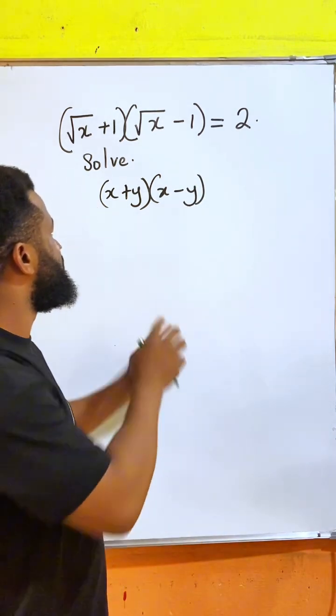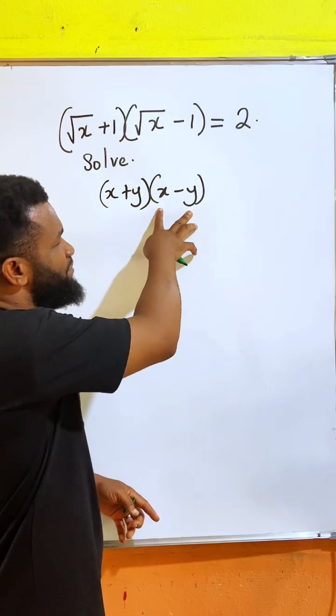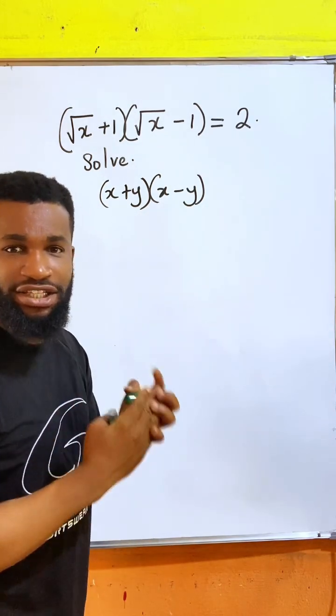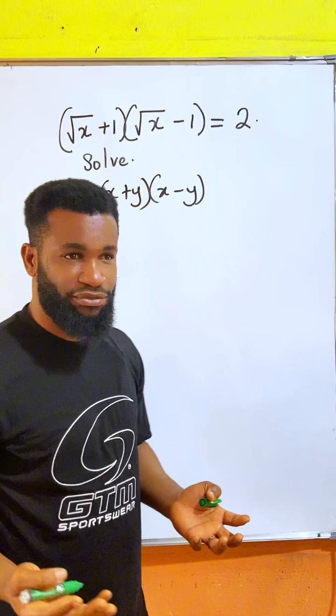Whenever you have the same thing adding, the same thing subtracting, and they are multiplying each other, we can apply the difference of two squares.